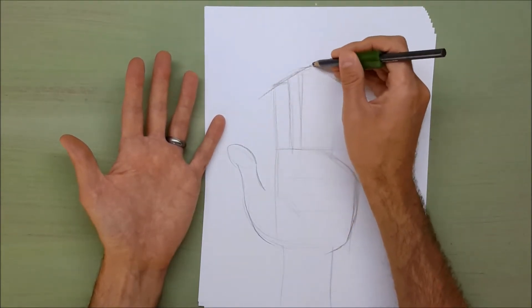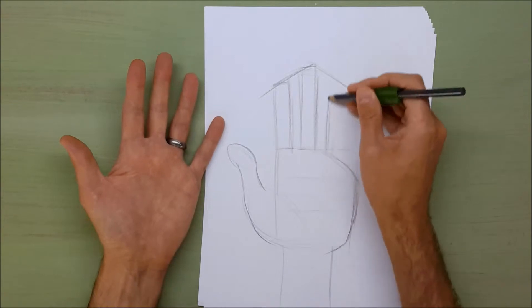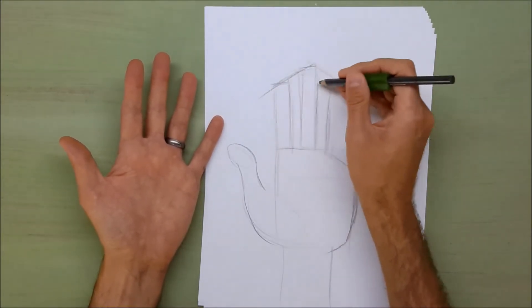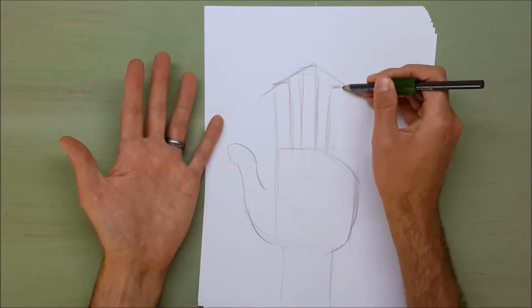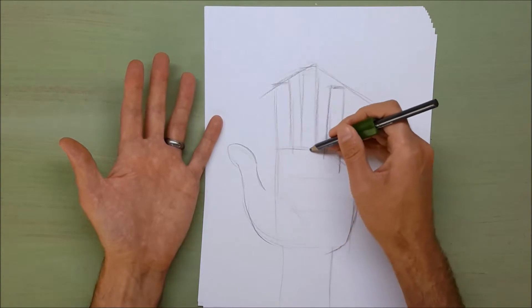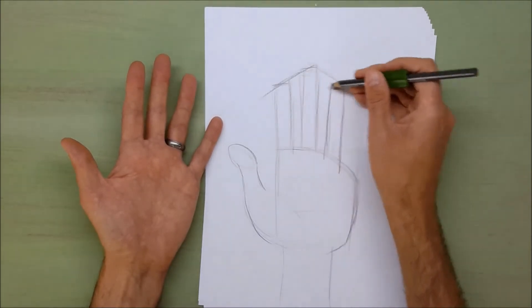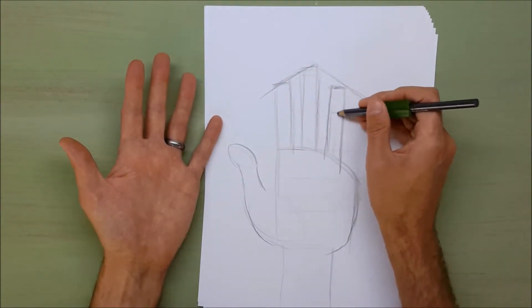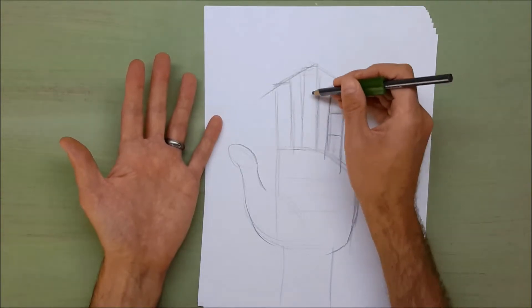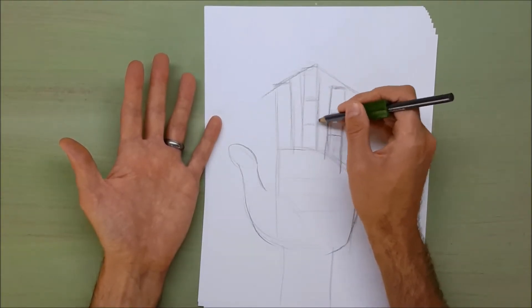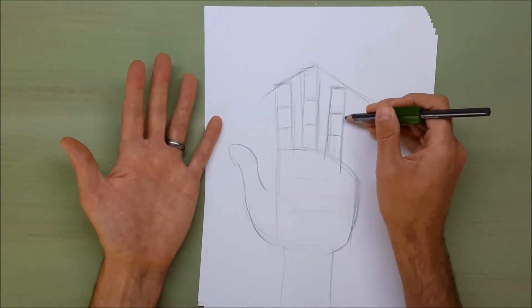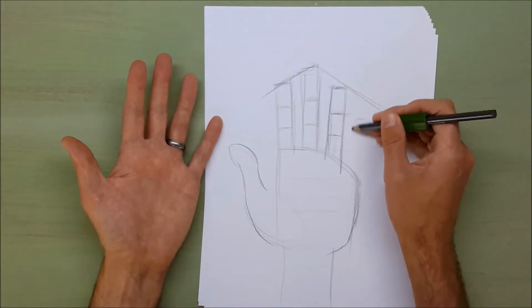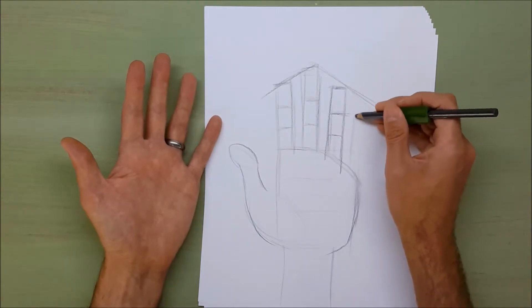I'm going to put the middle finger here. I'm just drawing rectangles. The pointer finger and the ring finger are about the same length, but because it goes down like this, it's going to be a little bit lower. And then we're going to divide these fingers up into thirds, and I'm going to put the pinky finger just below that first, that top part.